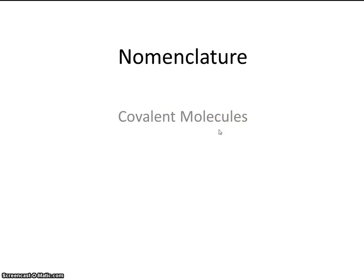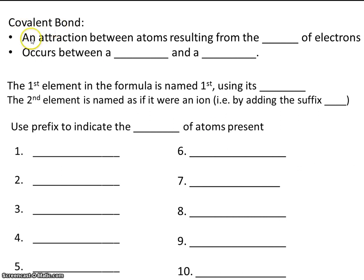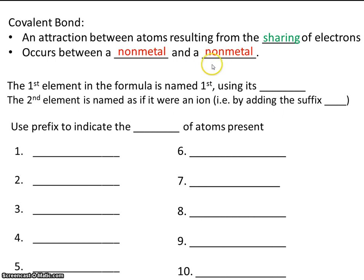So the trick will be to recognize if you're dealing with an ionic compound or something that's covalent. Remember that an ionic compound is a bond between a metal and a nonmetal. Let's contrast that with a covalent bond — that's an attraction between atoms resulting from the sharing of electrons, and it occurs between a nonmetal and a nonmetal. So here's the distinction: covalent is between two nonmetals, while an ionic bond is between a metal and a nonmetal.